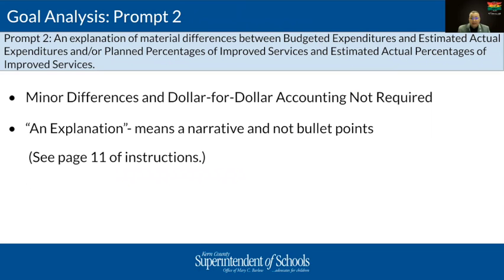This prompt asks you to look at your annual update table and identify the difference between your budgeted expenditures and what you estimate to be your actuals. Those estimated actuals represent what you have spent from your LCAP, and transparency is important here. Minor differences and dollar-for-dollar accounting is not required. However, a substantive or material difference may be different from district to district. A rule of thought: consider what your educational partners might consider to be substantial — whether that's a number or a percent. Some may use 10% as a substantial difference, while others might call out dollar amounts.